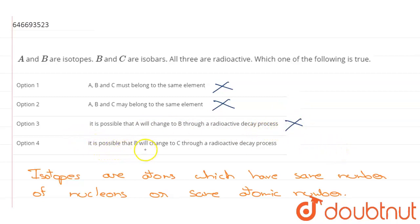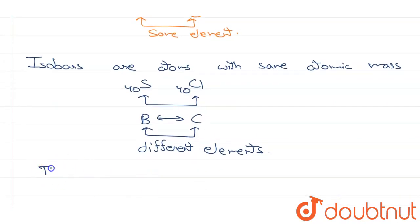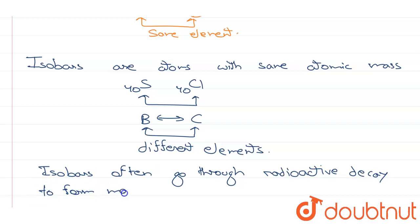Option 4 says that it is possible that B will change to C through radioactive decay process. In nature, isobars often go through radioactive decay to form more stable nuclei.